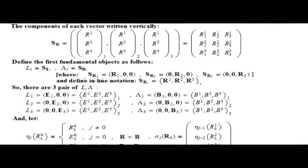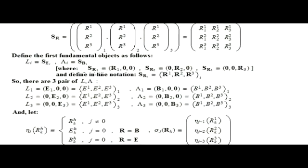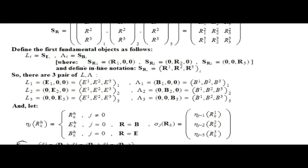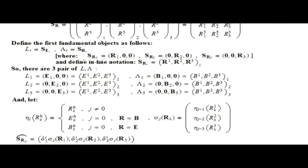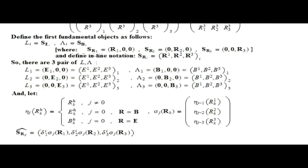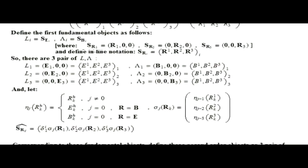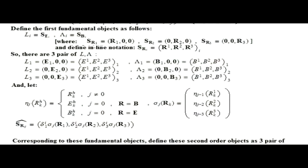Define the first fundamental objects as follows. Cap L sub i is defined as S sub E sub i. Cap lambda sub i is defined as S sub B sub i, where S sub R sub 1, 2, 3, R is shown here. And define inline notation S sub R sub i as R1, R2, R3 sub i. So there are three pair of L lambda. Cap L sub 1, 2, 3 and cap lambda sub 1, 2, 3 are given as shown here.